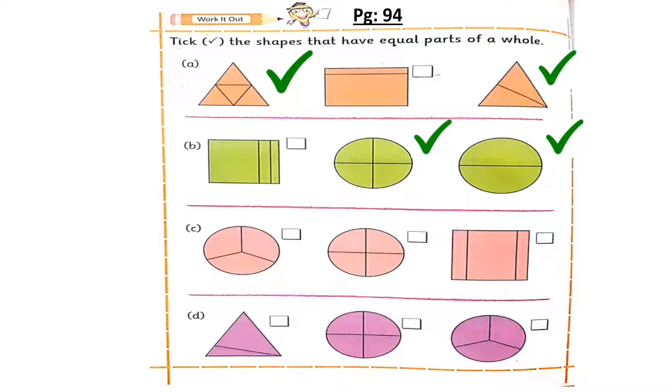And can you tell me in the third row which figure shows equal parts? Yes, very good. It's first and second. And in the last row it's second and third.